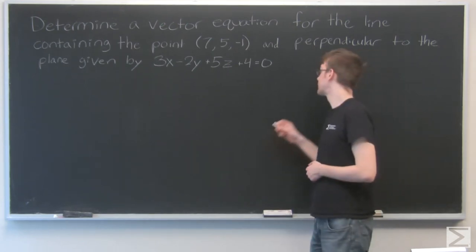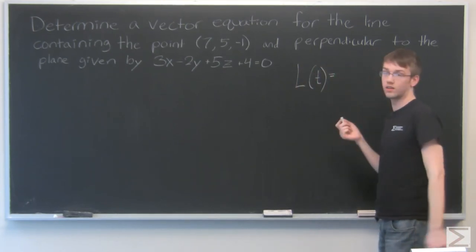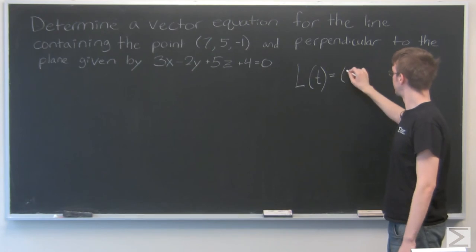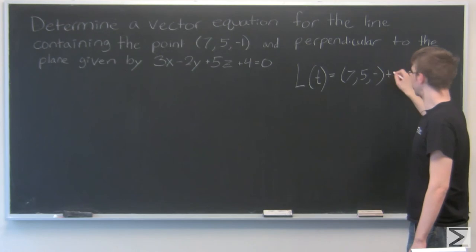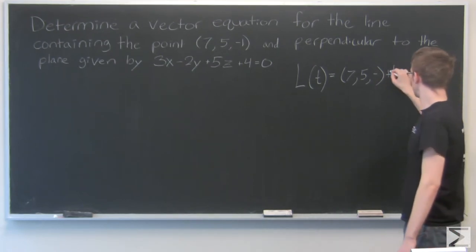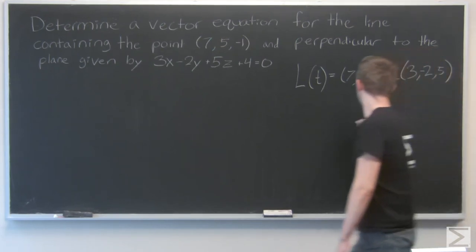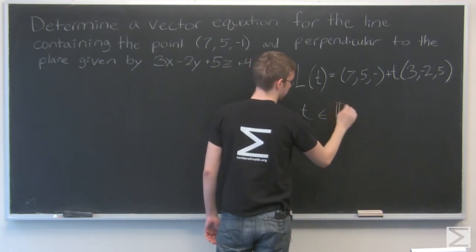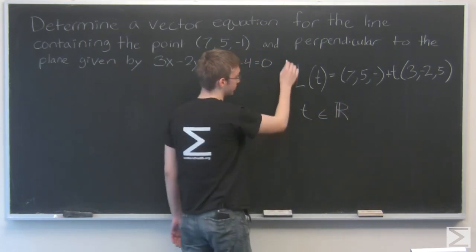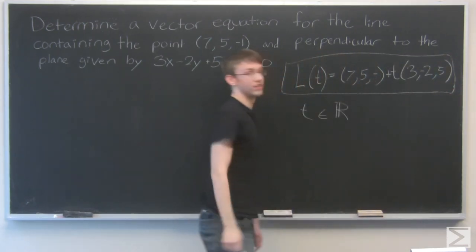So, really all we need to do for this problem, our line is going to be the point plus t times 3, minus 2, and 5, where t is a real number. So that's your equation.